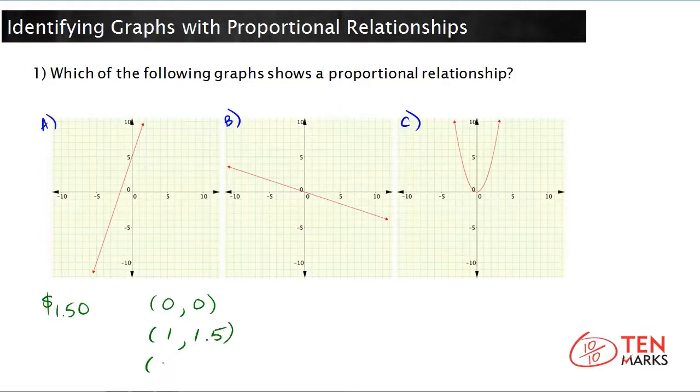What happens when you sell two brownies? You sell two brownies, x equals 2, and y equals 3. You made $3.